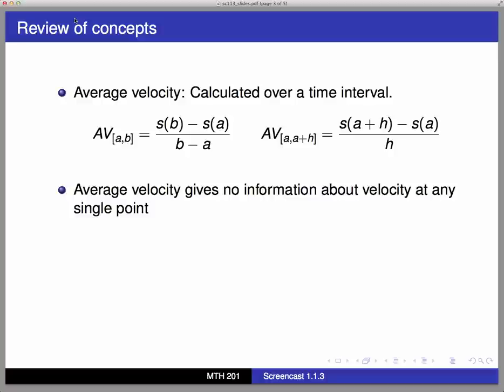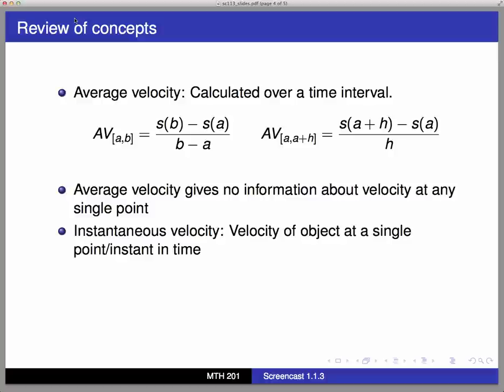When we calculate average velocity, we calculate it over an interval, and we need two different time values to feed into the formulas. By contrast, the instantaneous velocity of an object is how fast it's traveling at a single instant, at a single moment in time. So when we calculate an instantaneous velocity, we speak of finding the instantaneous velocity at a certain time value — just one, not two of them.